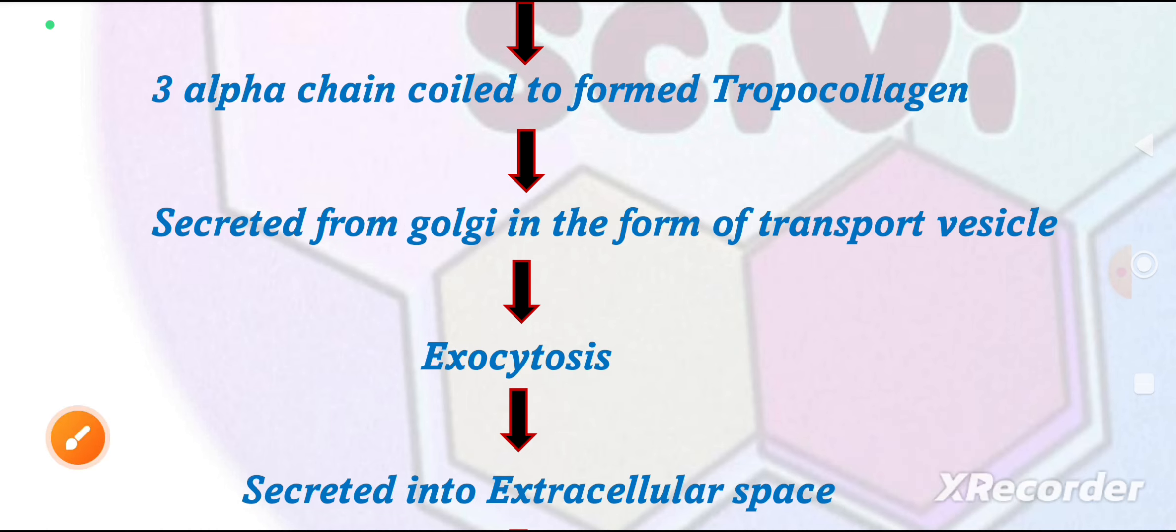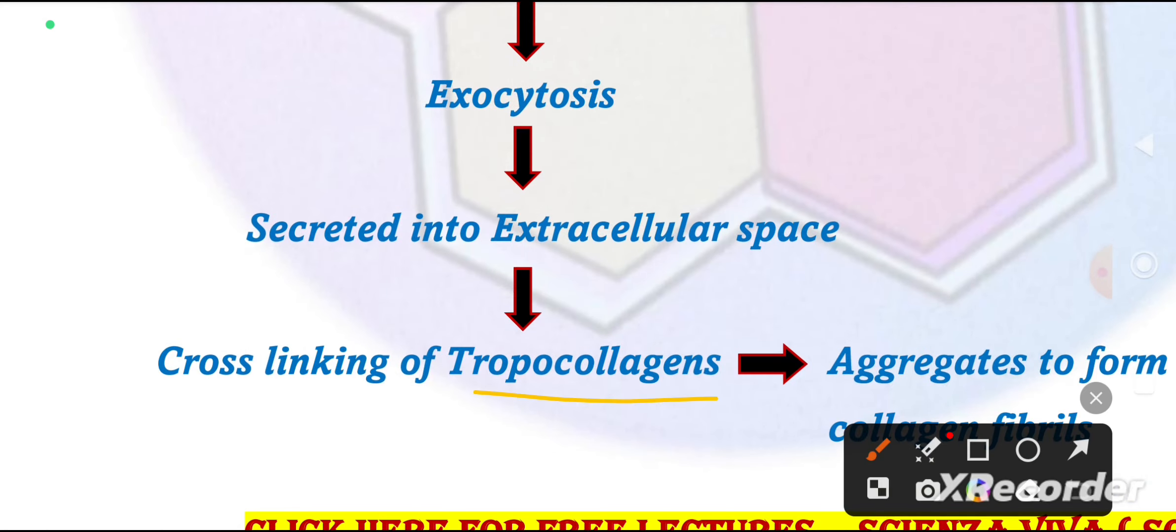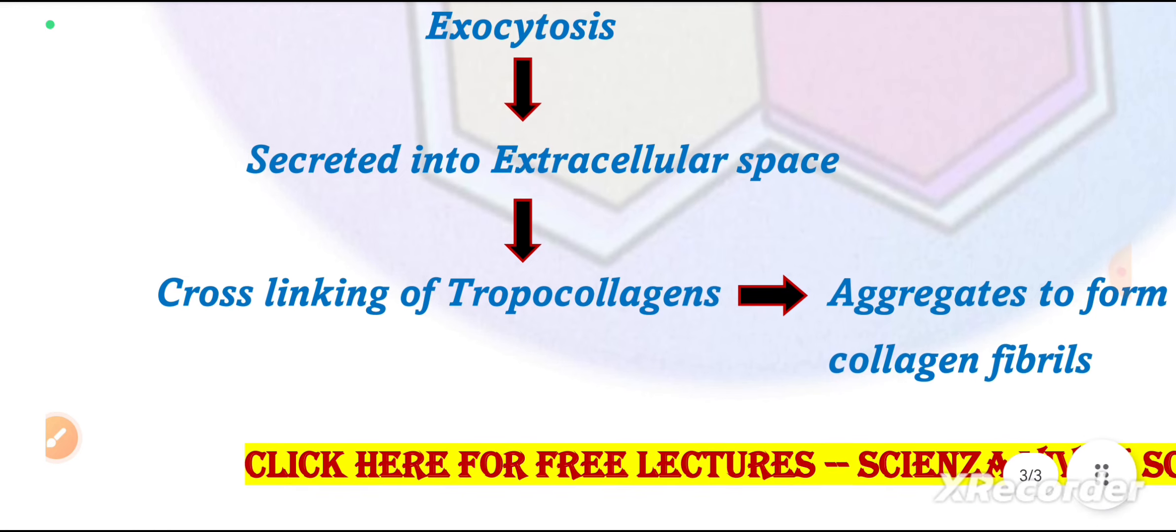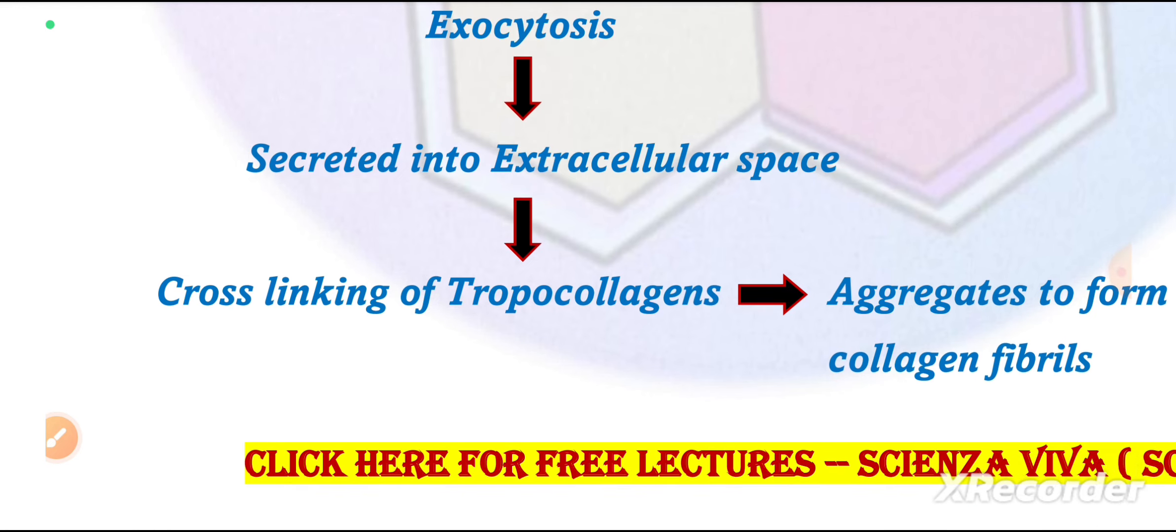In the extracellular matrix, cross-linking forms between the tropocollagens, which we have now studied, intra or inter kind. They will form a collagen fiber. Collagen synthesis will complete after coming out of the cell. What is happening in the cell? The alpha chains will be synthesized in the cell and form tropocollagen. That was all about the collagen protein synthesis.